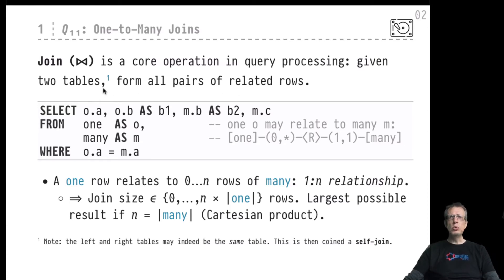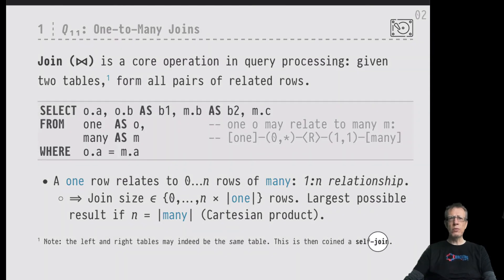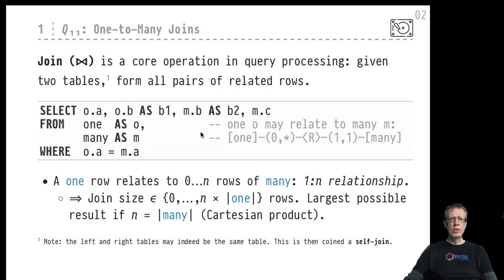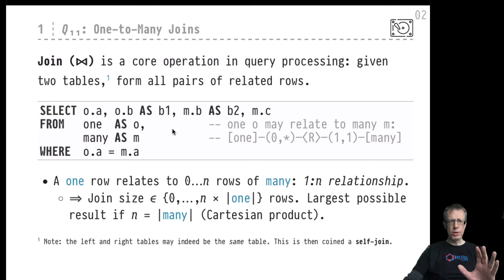When we are talking about two tables, both of these tables don't have to be different. If the two tables are the same table — for example, R join R — then what we are talking about is a so-called self join. That would be a particular type of join that needs some consideration regarding buffer management and so on. But we will not look further into self joins here; we will talk about two general tables participating in the join operation.